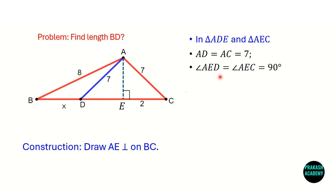Also, angle AED is 90 degrees, which is equal to angle AEC, because AE is perpendicular to BC so both angles are 90 degrees. These two angles are equal, and side AE is common to both triangles. This means the two triangles are congruent.